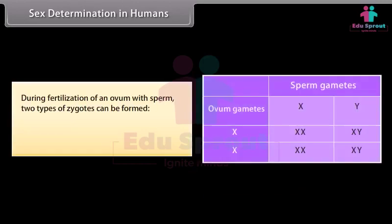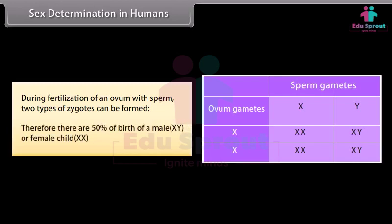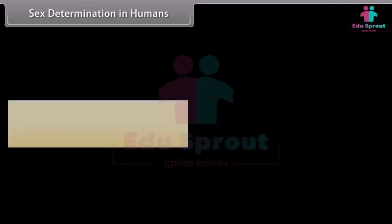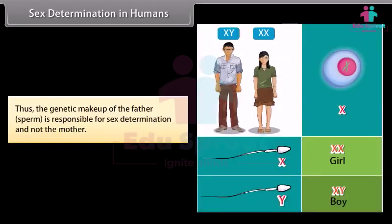During fertilization of an ovum with sperm, two types of zygotes can be formed. Therefore, there is a 50% chance of birth of a male (XY) or female (XX) child. Thus, the genetic makeup of the father's sperm is responsible for sex determination, and not the mother.